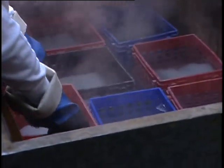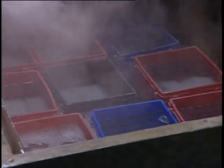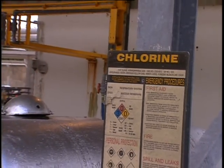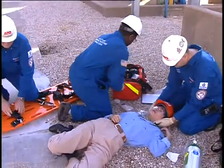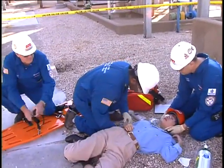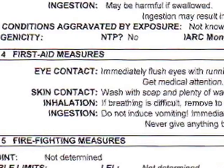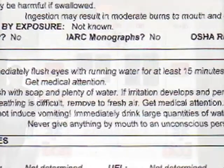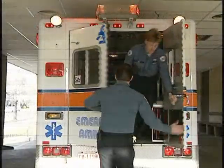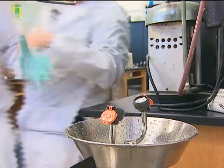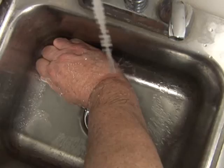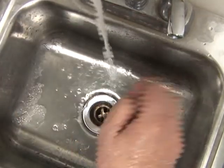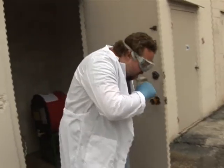Avoiding exposure to hazardous chemicals is extremely important. Following chemical and SDS warnings will help minimize exposure. If an employee is exposed, then steps need to be taken to limit the effects. First aid instructions are listed on the SDS and should be followed until medical help arrives. First aid might include flushing eyes with emergency eye wash, removing contaminated clothing and washing the contact area of the body, applying cool water on the burn area, and moving to an open area to get fresh air.